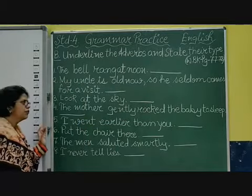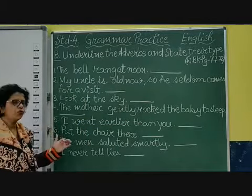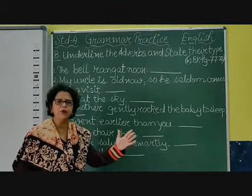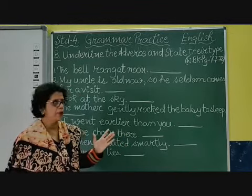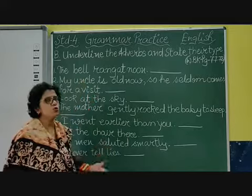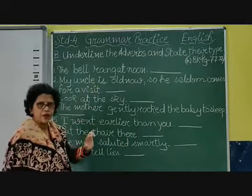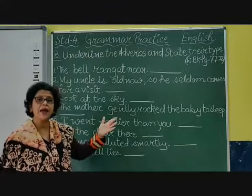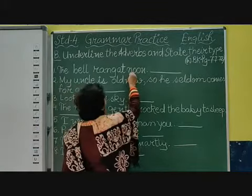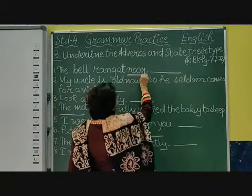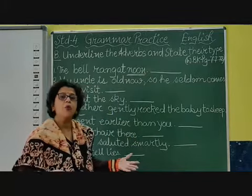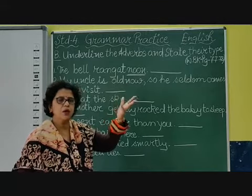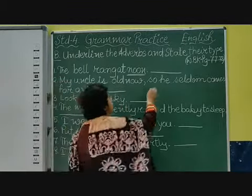To find an adverb, we need to find the verb first. The sentence is: 'The bell rang at noon.' The verb here is 'rang,' which is the past tense of 'ring.' When did the bell ring? The bell rang at noon. Noon means at 12 o'clock. So 'noon' is the adverb, and it is an adverb of time.